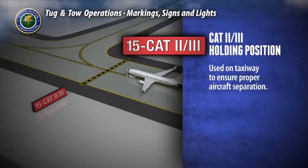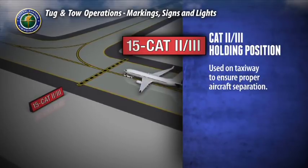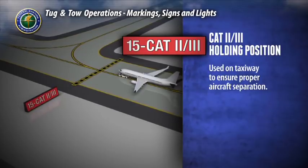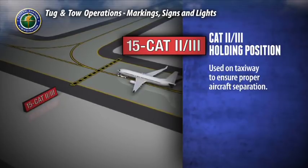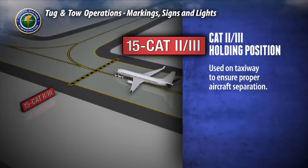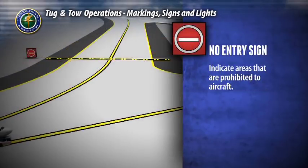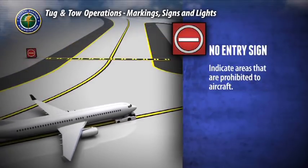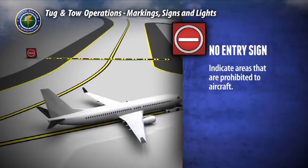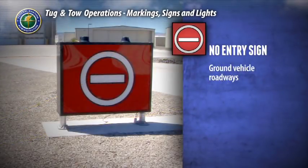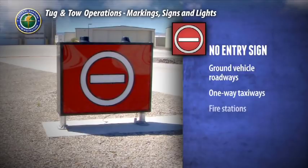The Cat 2 / Cat 3 holding position sign is used on a taxiway parallel to a runway during Cat 2 / Cat 3 operations to ensure proper aircraft separation. The no entry sign will be located at the entry point of areas that are prohibited to aircraft — these areas may be ground vehicle roadways, one-way taxiways, fire stations, or other non-movement areas.